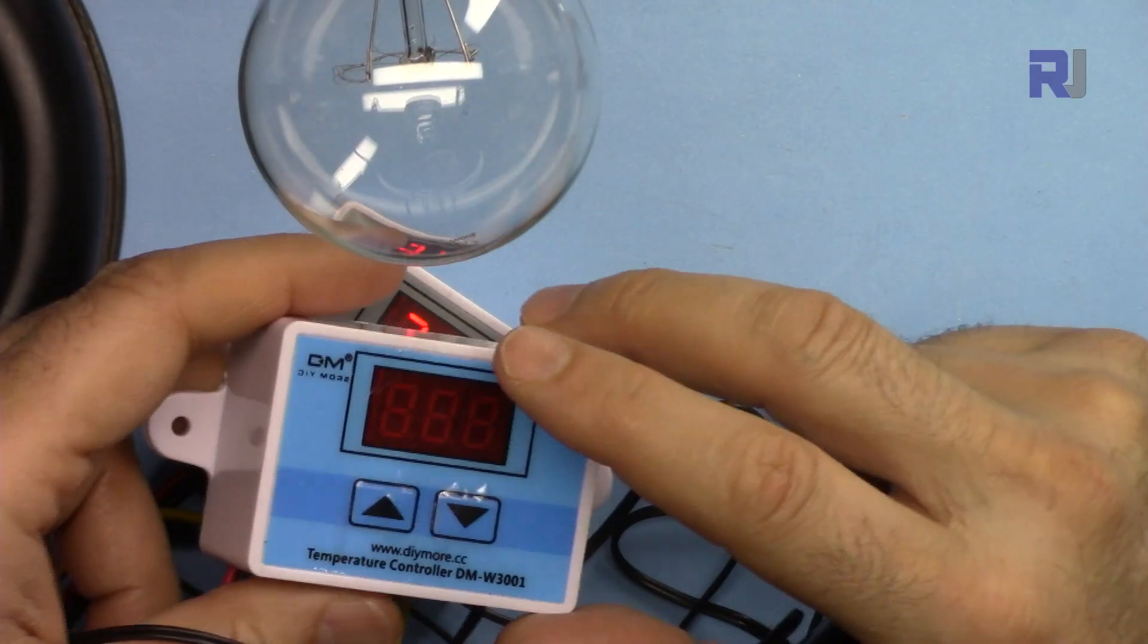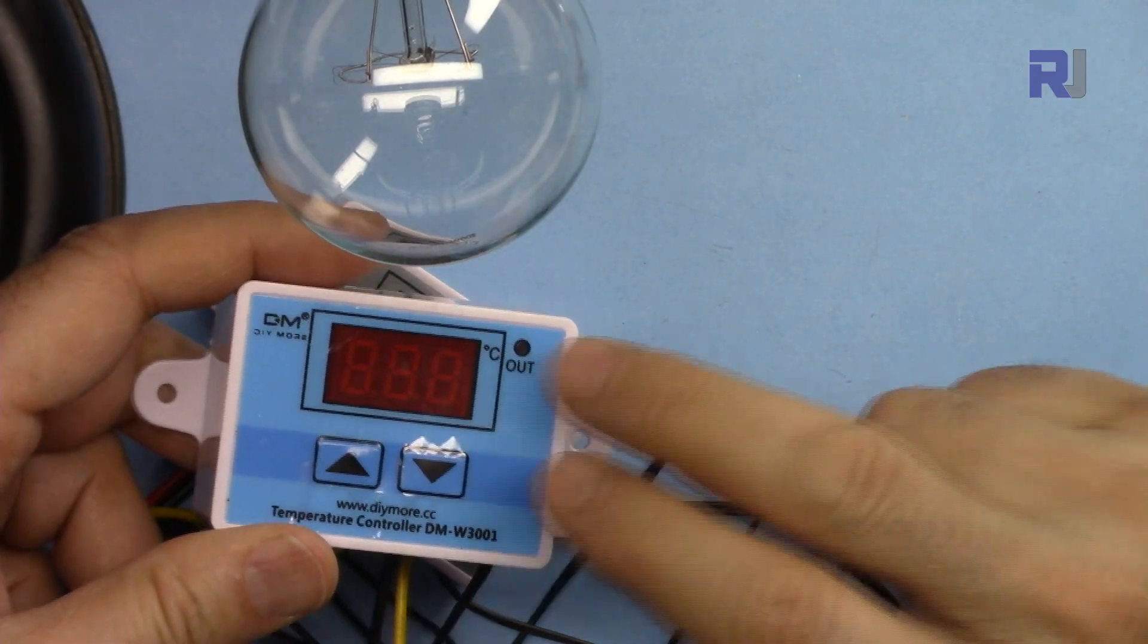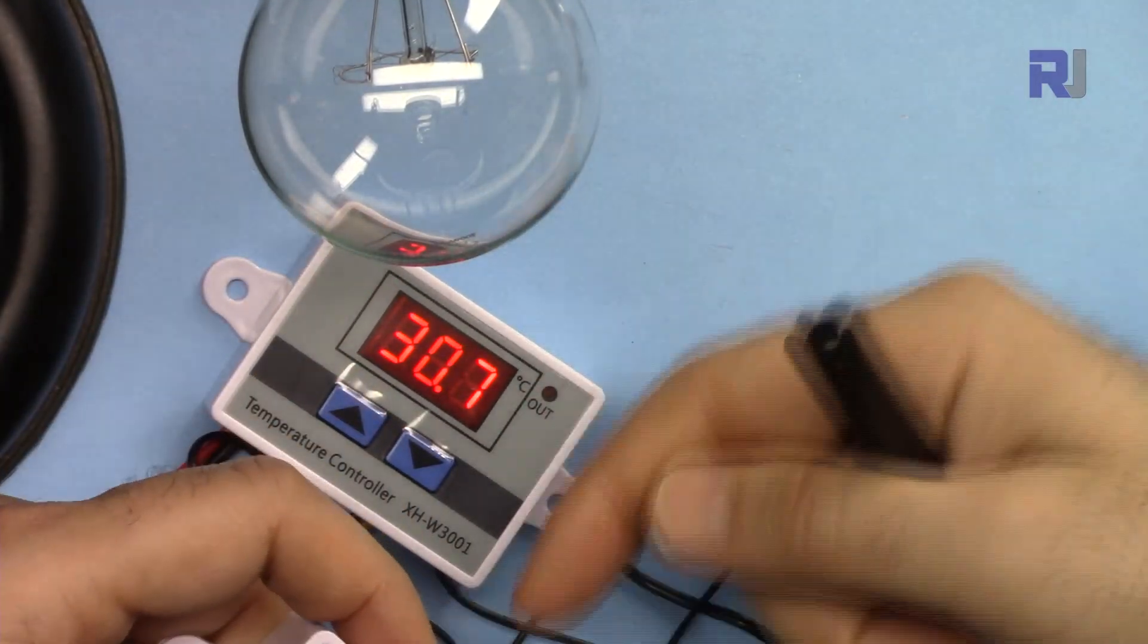For this AC version I have separate videos explaining the DC version of the same 3001. The link for that video is below the video in the description.